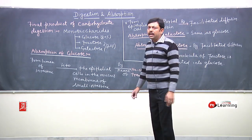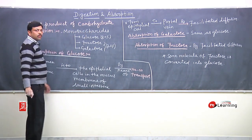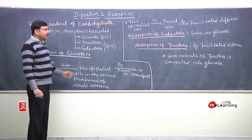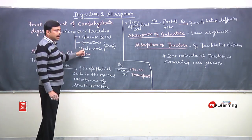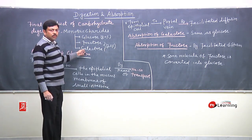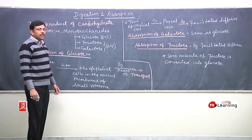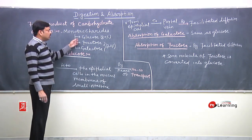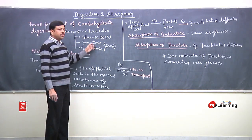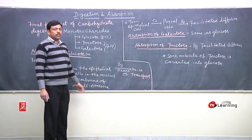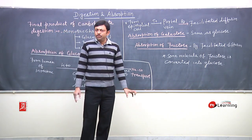The final product of carbohydrate digestion is monosaccharide. Among these, 80% is glucose and 20% is fructose and galactose. After digestion, monosaccharides are formed — glucose, fructose, and galactose. After digestion, absorption of glucose occurs in the small intestine.